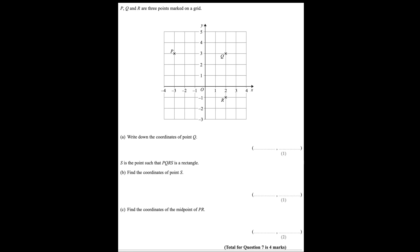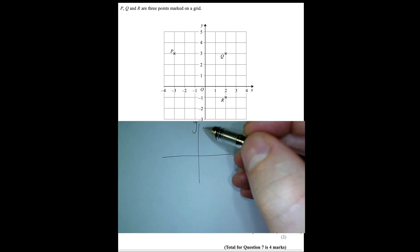OK, so this is a coordinates question, and of course we know that we have an x and a y. Y is always to the sky, and we normally have it in alphabetical order.